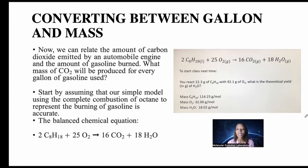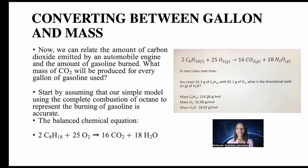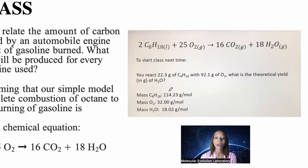Now we can relate the amount of CO2 emitted by an automobile engine to the amount of gasoline burned. What mass of CO2 will be produced for every gallon of gasoline used? Assuming complete combustion of octane to represent gasoline, the balanced equation is: 2 C8H18 + 25 O2 → 16 CO2 + 18 H2O. First, find the molar mass of octane: (12 × 8) + (1.01 × 18) = 96 + 18 = 114.23 grams per mole.